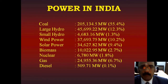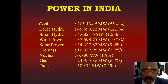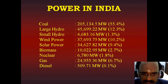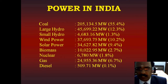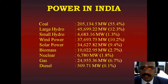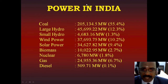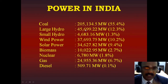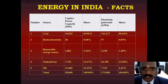Large hydro power plants contribute 12.3 percent. Small hydro power plants: 4,683 megawatts, which is 1.3 percent. Wind power: 10.2 percent. Solar power: 9.4 percent. Biomass: 2.7 percent. Nuclear: 1.8 percent. Gas: 6.7 percent and diesel: 0.1 percent. These are the power sources being utilized in India with reference to the 2020 scenario.